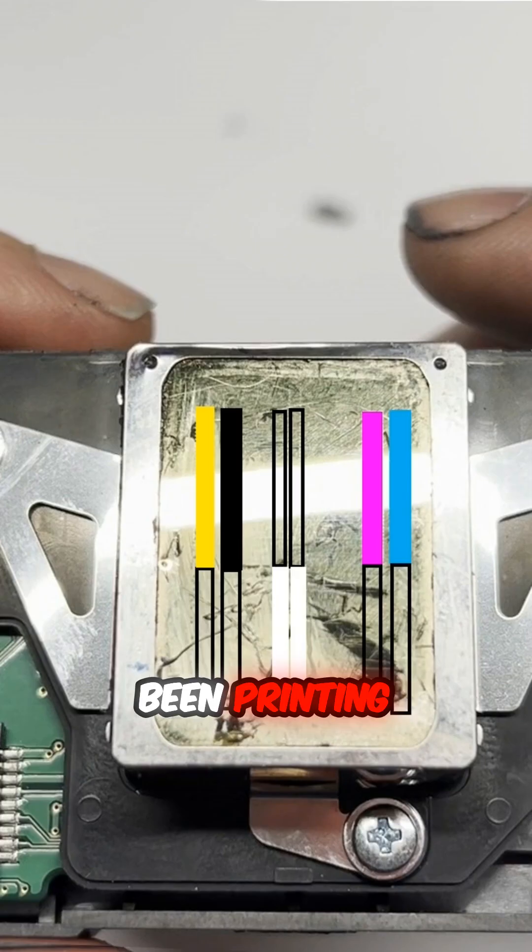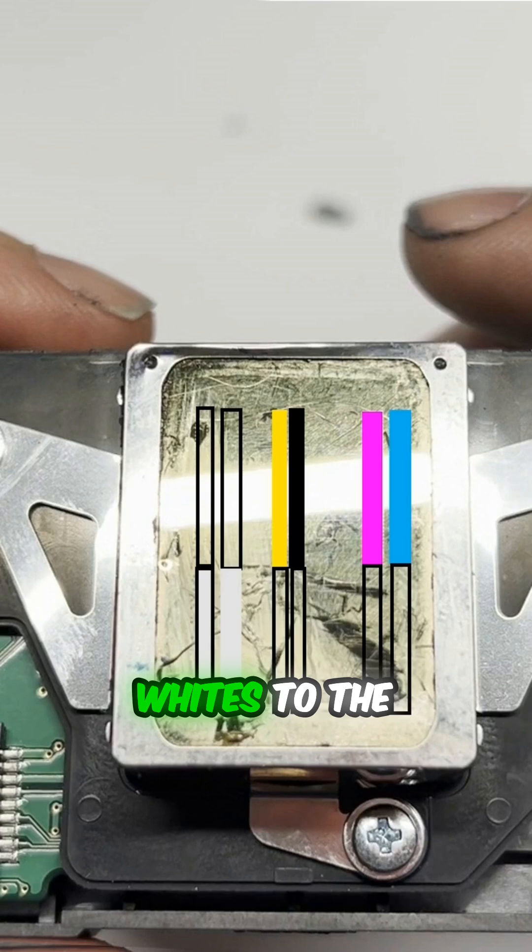Let's say we've been printing with this color sequence for a while, and the white is not clogged yet, but it starts to build up. Now, we can rotate the color. We move two whites to the left.